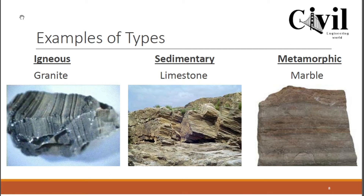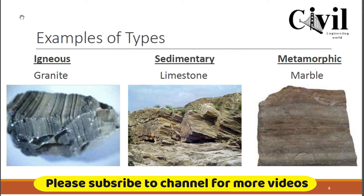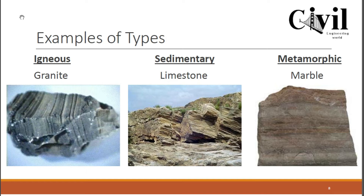Examples of each rock type: granite is an example of igneous rock — it has high density and is used to cut different materials. Limestone is an example of sedimentary rock, where layers are arranged above each other, each with a particular layer and distinct lines. Marble is an example of metamorphic rock.